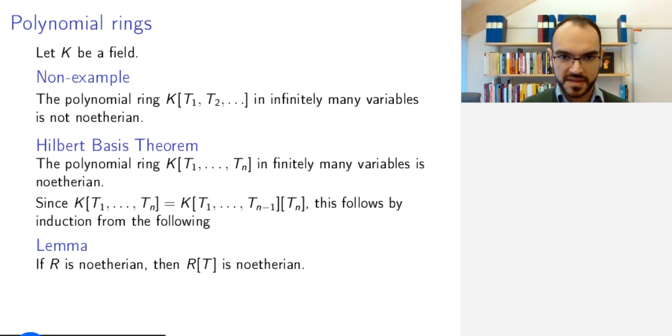The induction step then, if you believe this lemma, shows that if you have a polynomial ring in N minus 1 variables that is Noetherian, then the polynomial ring in N variables is Noetherian. And the base step is given by taking the ring equals to K. K is a field, so the only ideals are the zero ideal generated by zero and the whole field generated by one. So in particular, it's Noetherian. It's a principal ideal domain. And so you have the base step. Trivial.